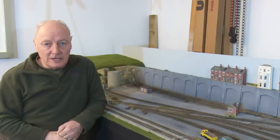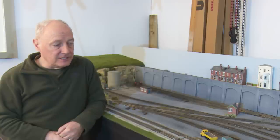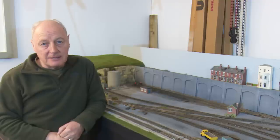The layout is actually wired into three different power districts. There's a power district for the loop that runs around the outside, there's a power district for the loco shed and a power district for the fuel depot.